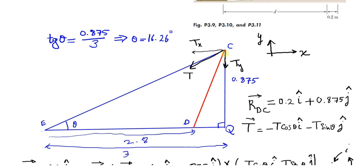I show the force T — the force at EC — at point C. We know that this force has two components: the vertical component TX and the horizontal component TY. I chose a coordinate system XY with X positive to the right and Y positive upward.